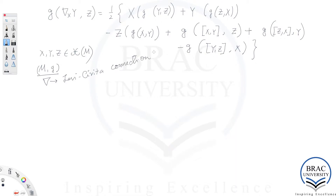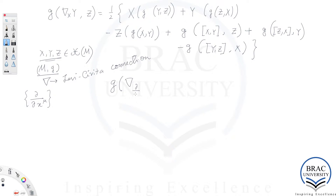Now, if I choose a coordinate basis of the underlying manifold and choose X, Y, and Z to be the coordinate vector fields — the basis vector fields — what happens to the Koszul formula? We are going to write G of nabla of del/del x^rho applied to del/del x^nu, comma del/del x^sigma.